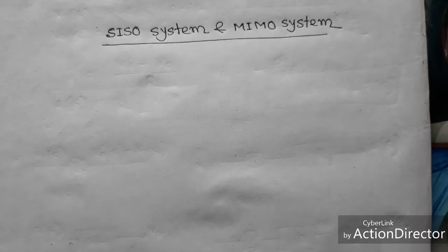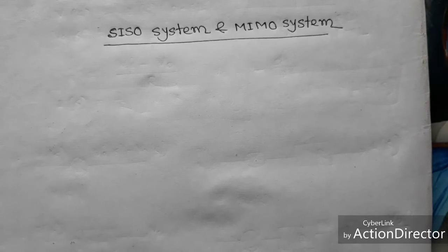Hi guys, this is Shoeval and today I will discuss about SISO and MIMO system. So SISO means single input and single output system, and MIMO means multiple input multiple output system.